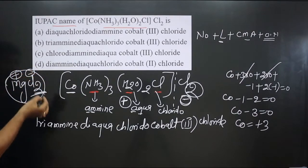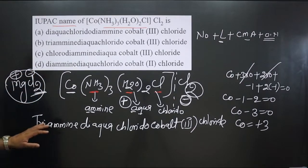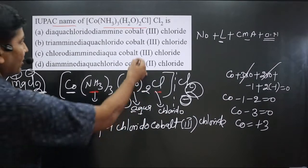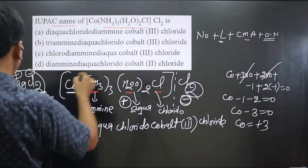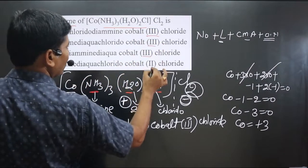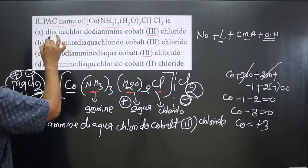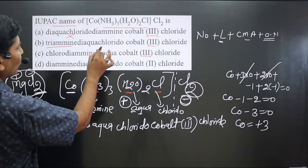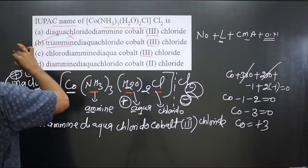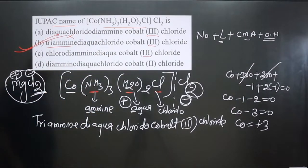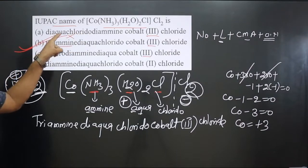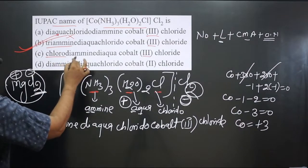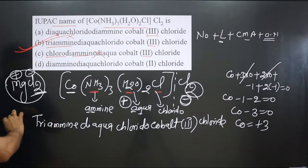The full IUPAC name is triaminediaquachloridocobalt(III) chloride. Looking at the options, all have cobalt(III), but option B is correct because it follows alphabetical order for the ligands. Options like 'chlorodiamine...' are incorrect as they do not follow the correct alphabetical naming order.